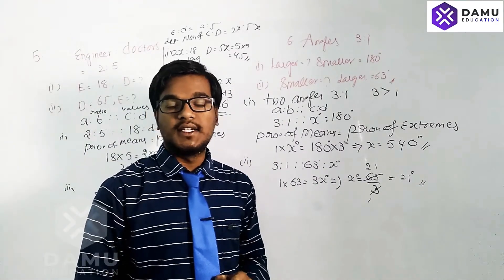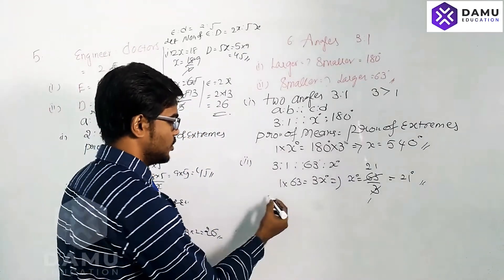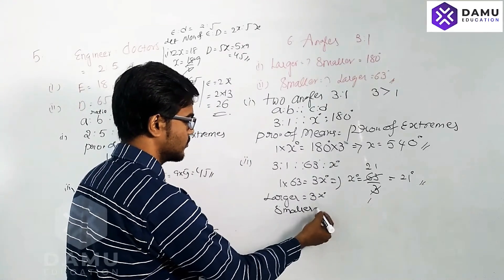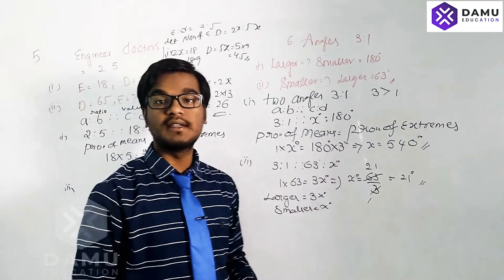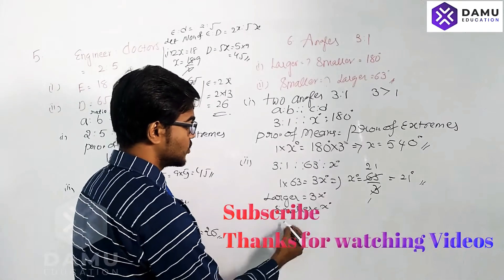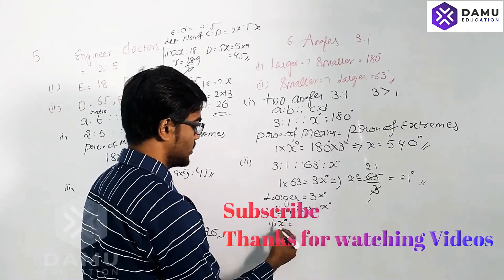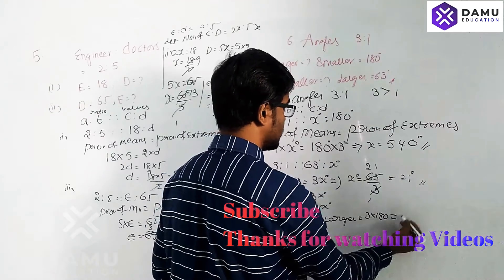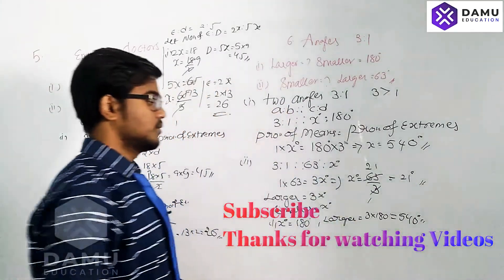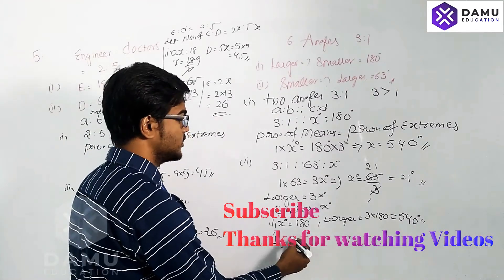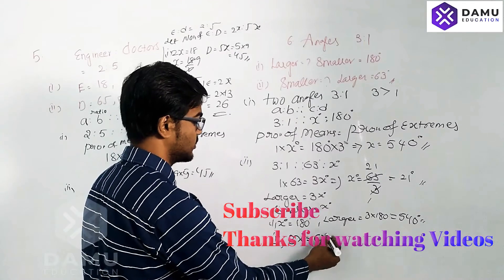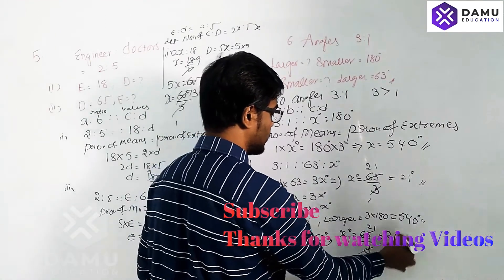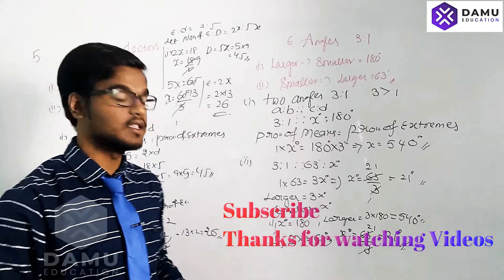Using the other method: the larger angle is 3x degrees and the smaller angle is x degrees. For the first case, the smaller angle x equals 180, so the larger angle is 3 into 180 equals 540 degrees. For the second case, the larger angle 3x equals 63 degrees, so x equals 63 divided by 3, giving 21 degrees. The smaller angle is 21 degrees.